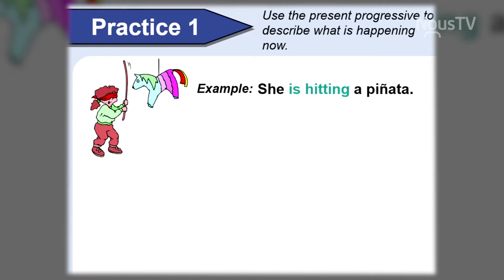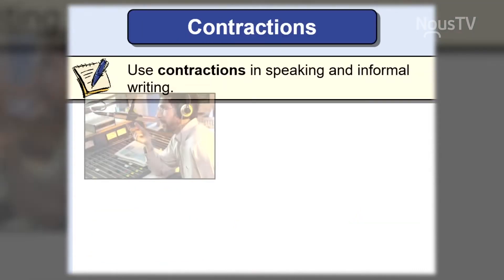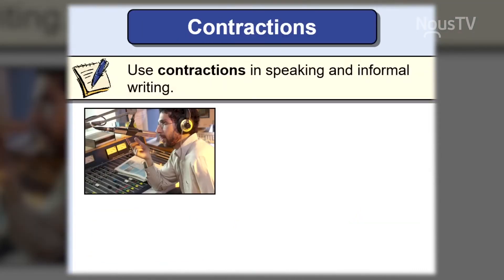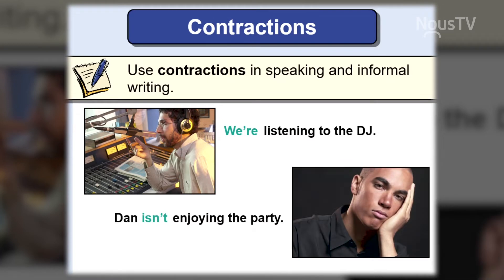Practice for use of the present progressive. She is hitting the piñata. Now, contractions: use contractions in speaking or informal writing. For example: 'we are' becomes 'we're' — we're listening to the DJ. Dan isn't — a negative — enjoying the party. He looks rather bored, doesn't he?